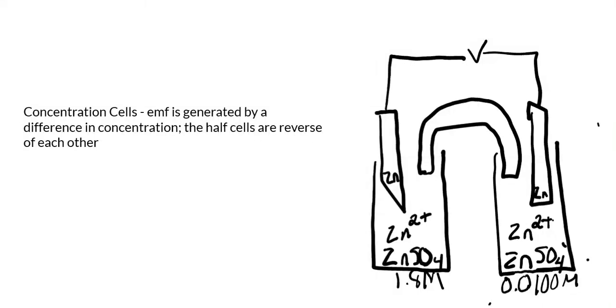Hello everybody, we are going to talk about concentration cells. Now we've already talked about voltaic cells - concentration cells have the same idea going on, but we're going to have the EMF generated by the difference in concentration. So you're going to see we have almost identical cells. In this case, the half cells are just going to be the reverse of each other, so whereas one is oxidizing and losing those electrons, the other cell is going to be gaining them.